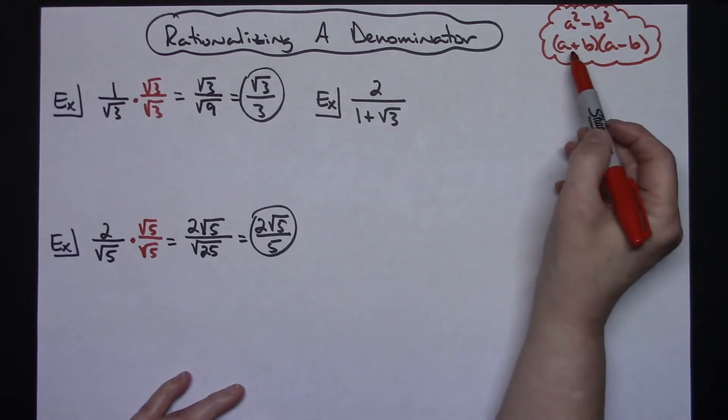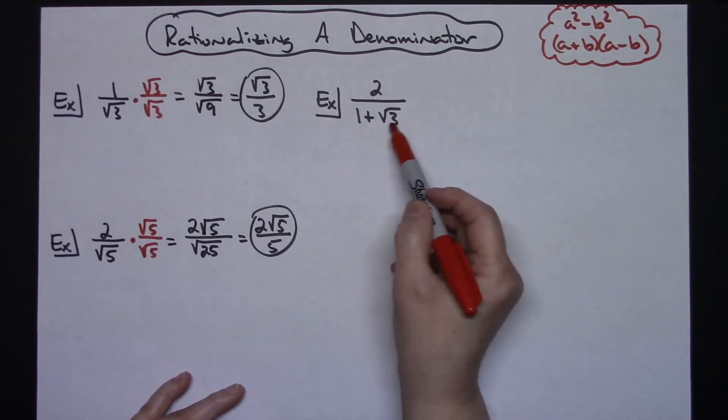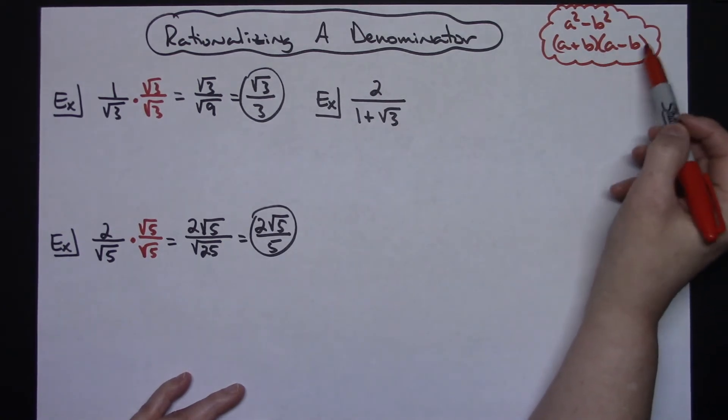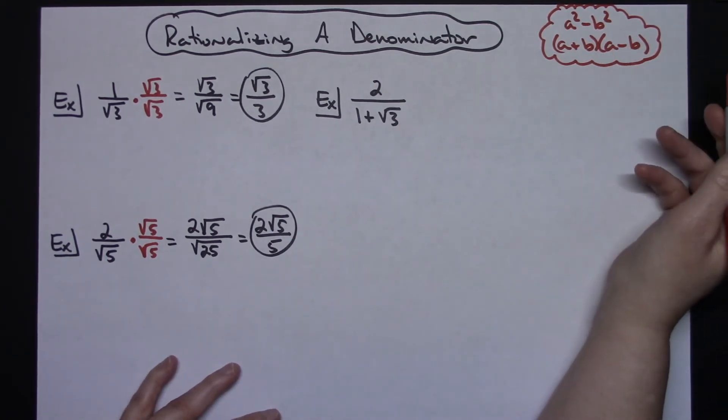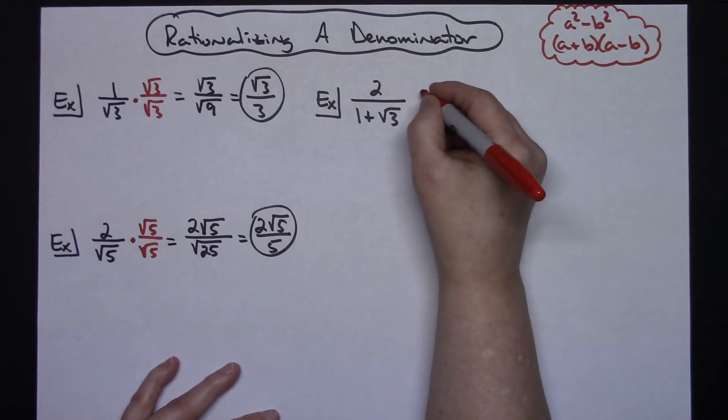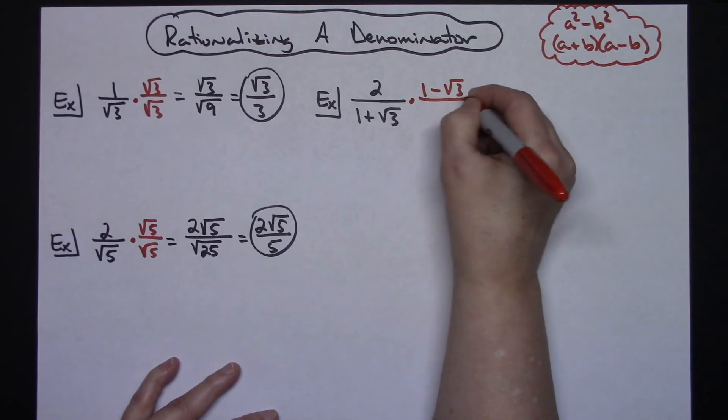If I've got the plus, I've got this one—I've got 1 plus the square root of 3. I need to come up with this term. So that's why I have to use a minus sign. So I'm going to multiply by a 1 minus square root of 3 over a 1 minus square root of 3.